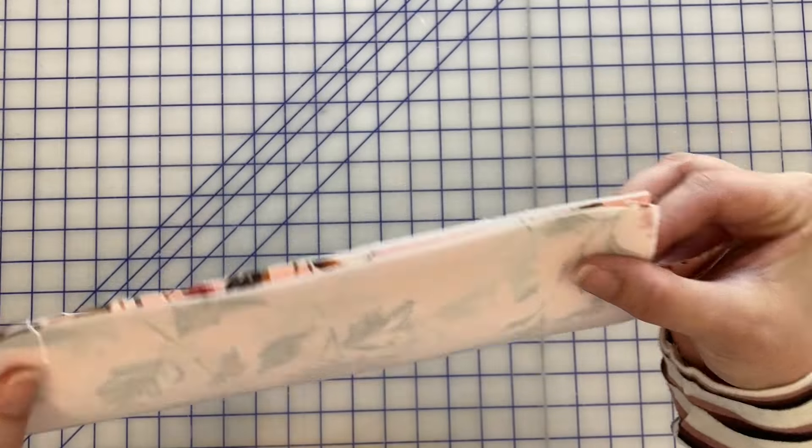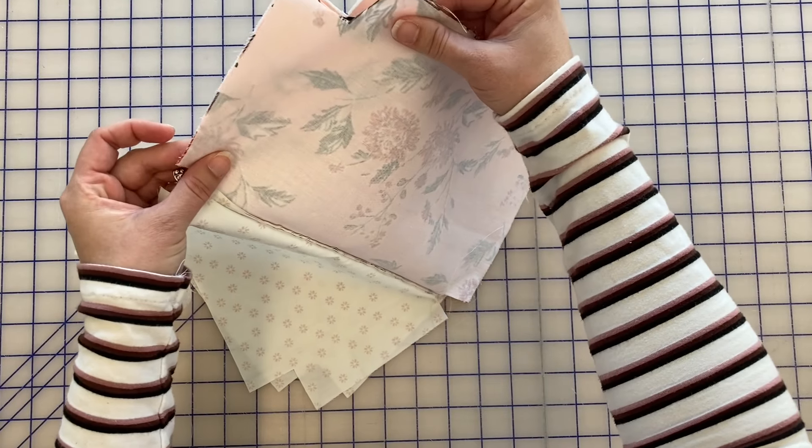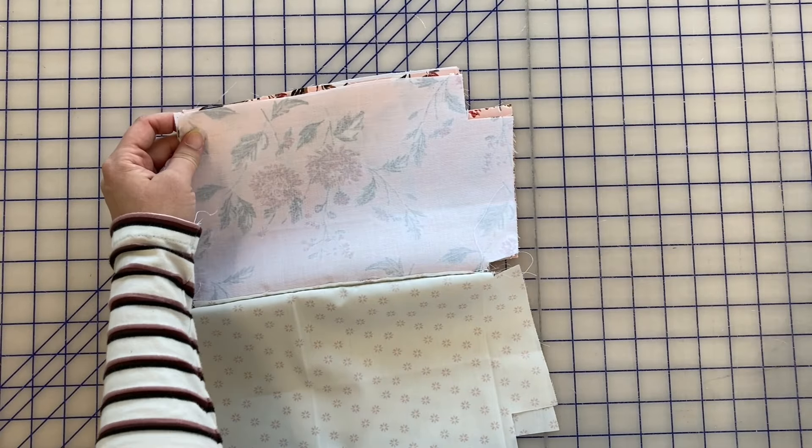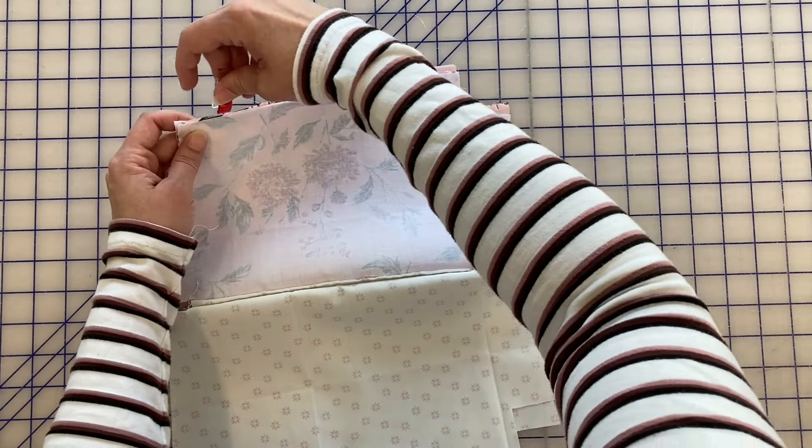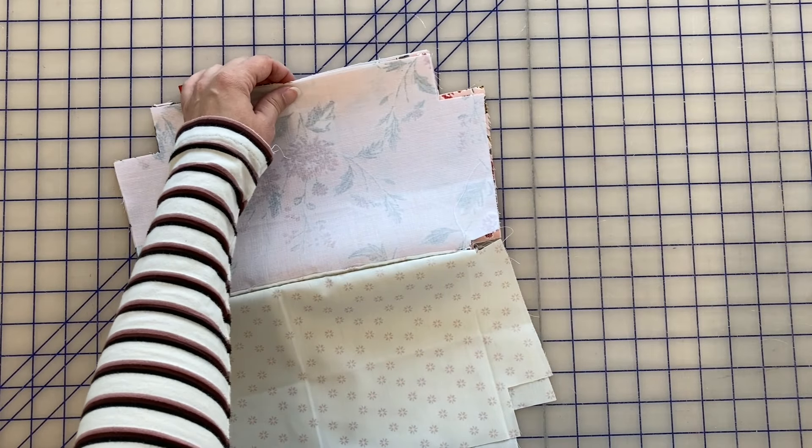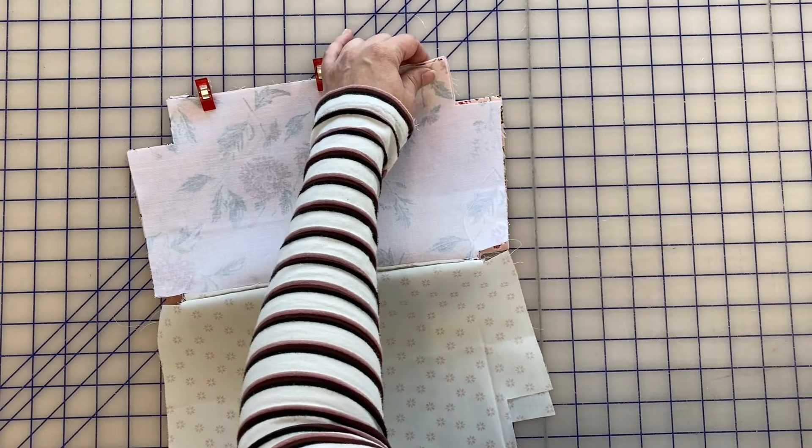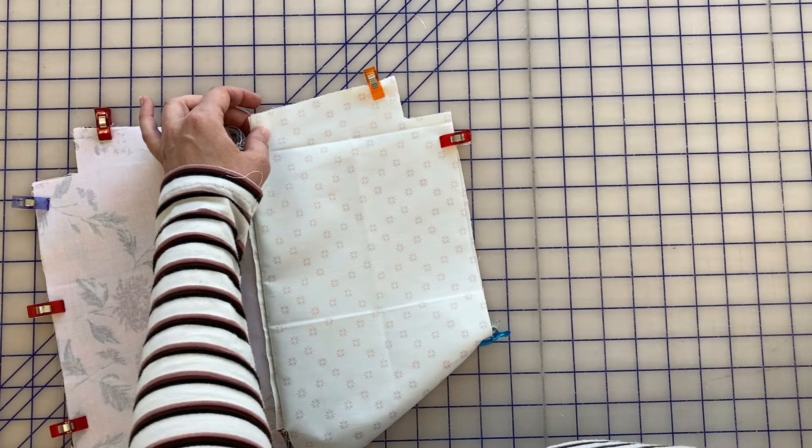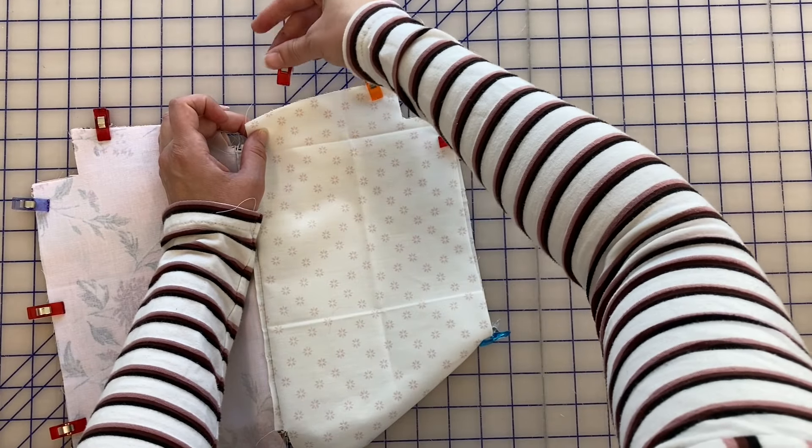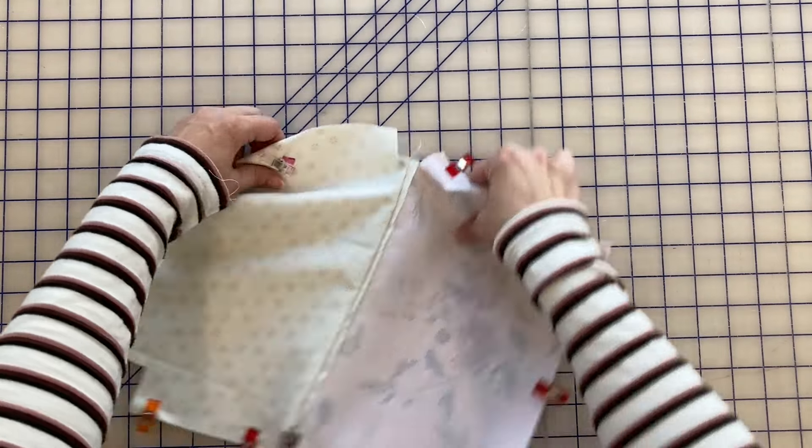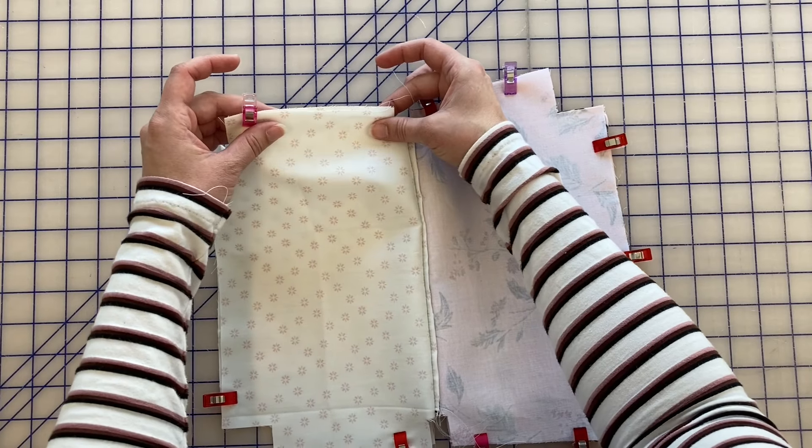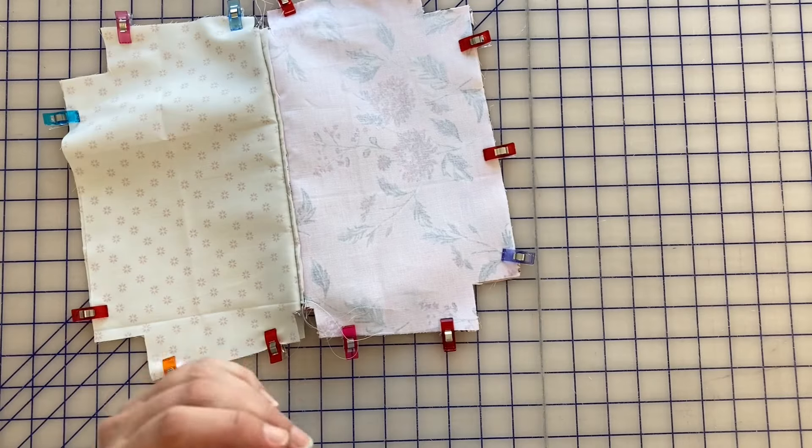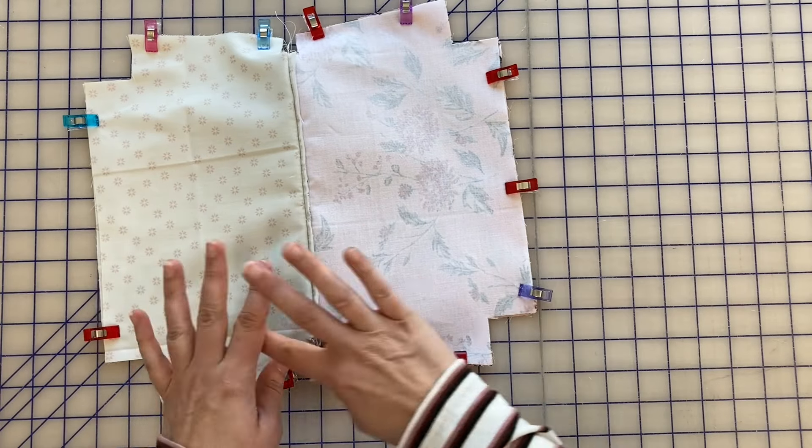So we're going to have our two exterior pieces come together. Okay, so I've got this all clipped together. Now I am going to sew in certain spots and not in other spots.